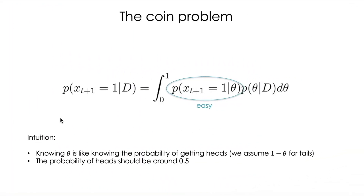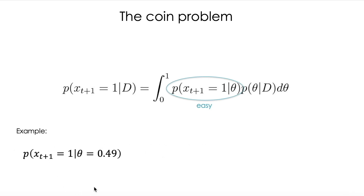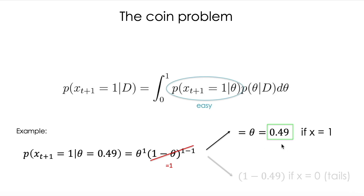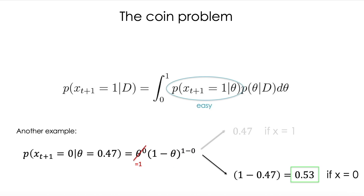So why is the first factor easy? Because since we know theta, we know the probability of getting heads or tails — for an unbiased coin this is around 0.5. Using the Bernoulli distribution: if theta is 0.49, the probability that the next flip equals one is theta raised to one times (1-theta) raised to zero, which equals 0.49. If we want the probability of tails given theta = 0.47, then the tails term survives and we get one minus 0.47, which is 0.53. So if we know theta, we can immediately calculate this factor in the integral.